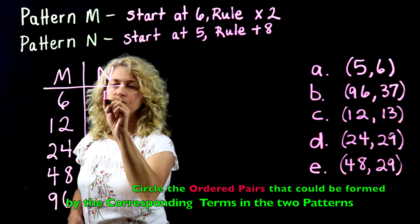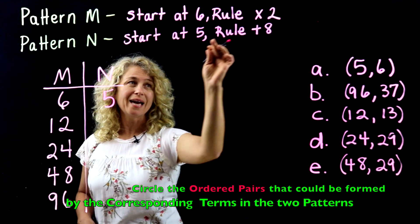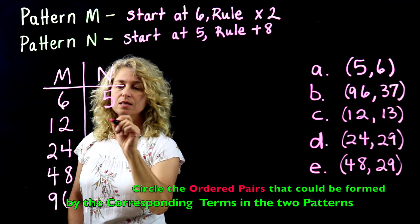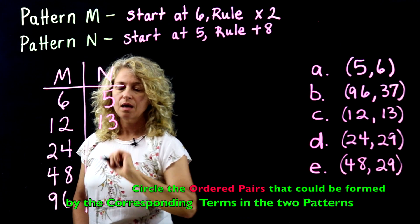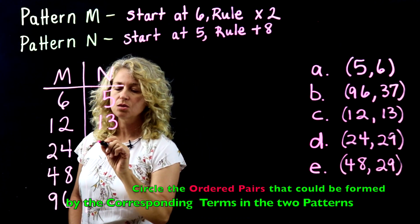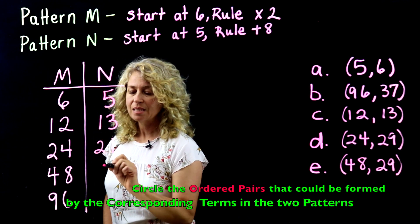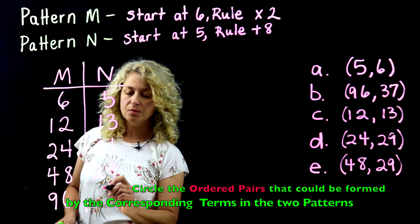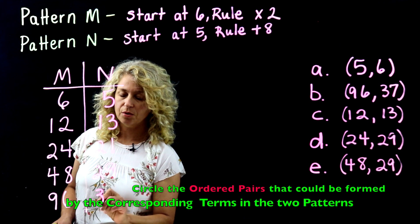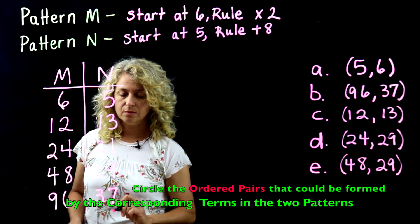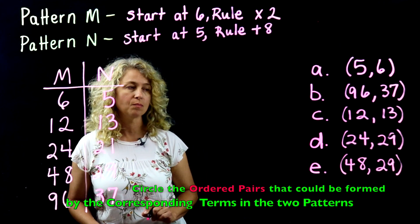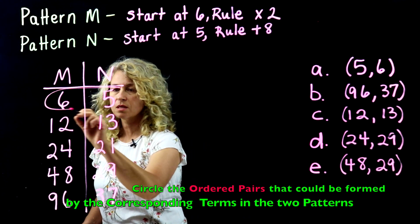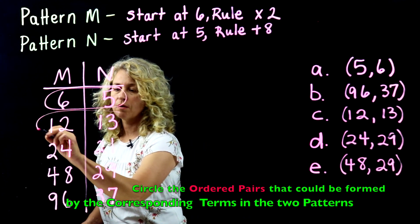Pattern N starts at 5, rule is add 8: 5, plus 8 is 13, plus 8 is 21, plus 8 is 29, plus 8 is 37.